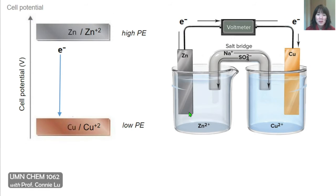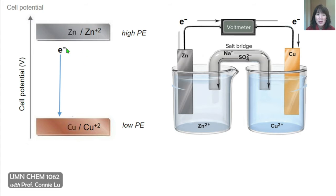In the zinc-copper voltaic cell, we can measure the cell potential simply by putting a voltmeter in the wire that connects the two metal electrodes. The readout of this voltmeter is equal to the cell potential, or the potential difference between the zinc and copper electrodes. Electrons spontaneously flow from zinc towards the copper electrode, where copper 2+ gets reduced to copper metal, consistent with movement from high electric potential energy to low electric potential energy.